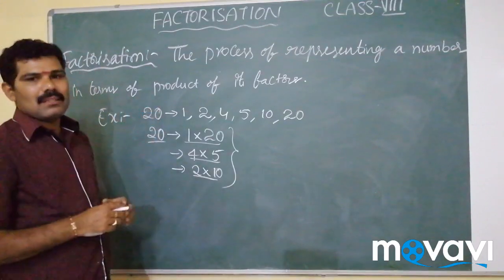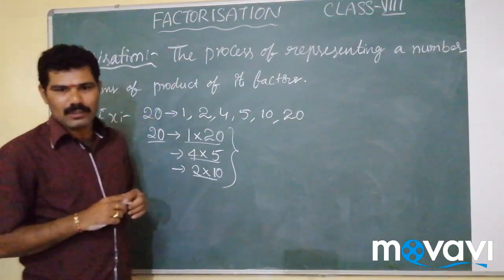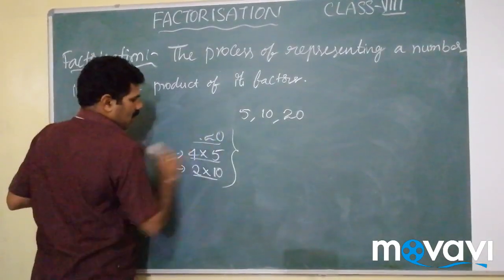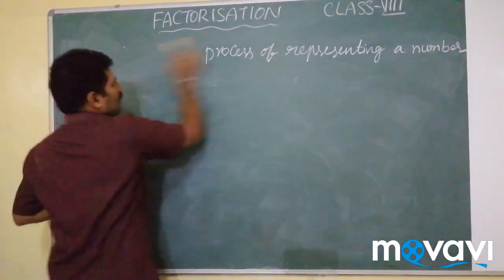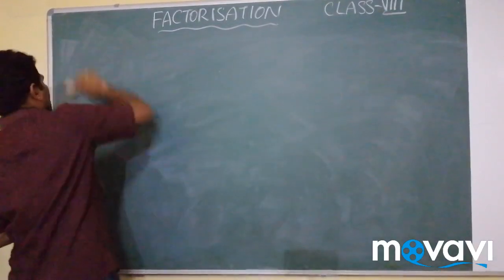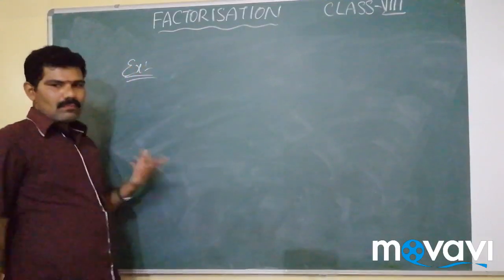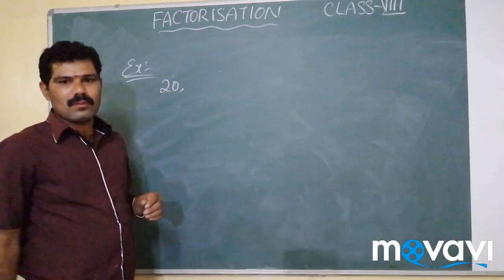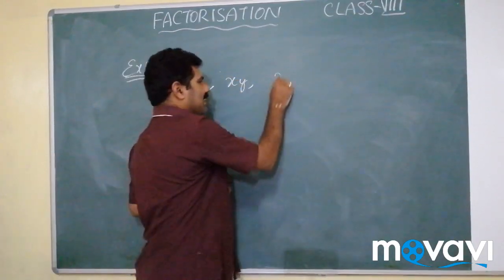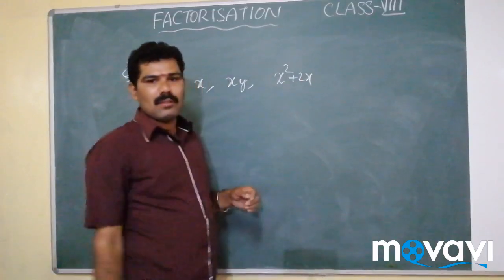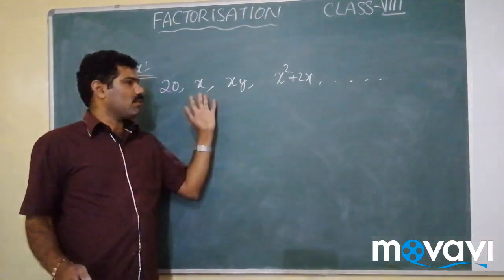Coming to the part of our chapter, we are not going to discuss factorization mostly in general numeric terms. We are going to discuss expressions. Examples of expressions include 20, x, xy, and so on. We can have innumerable examples of expressions.